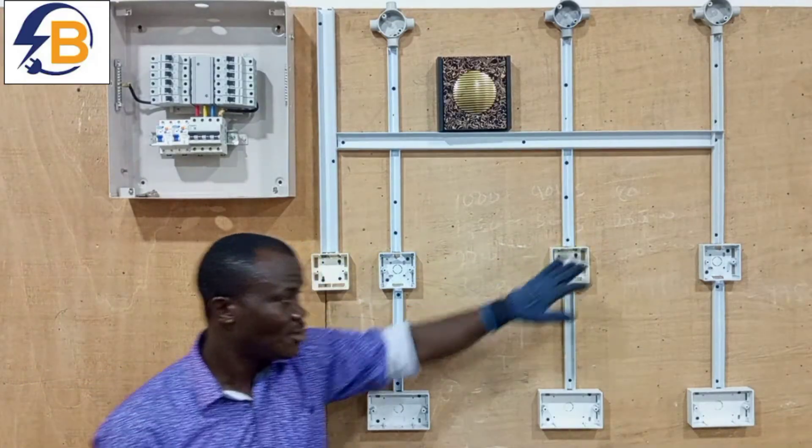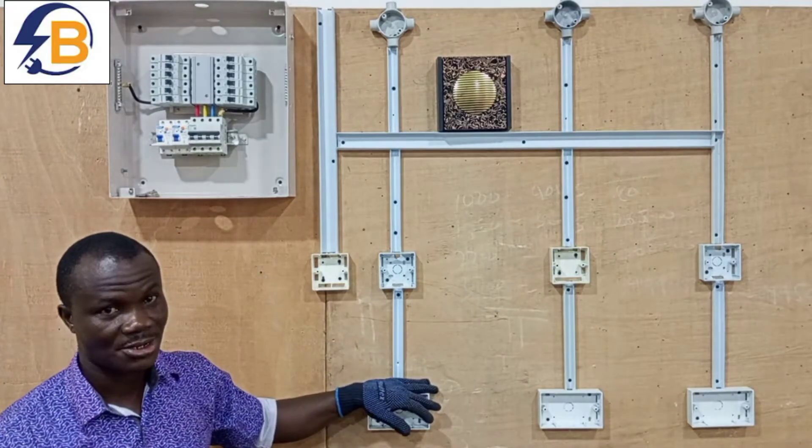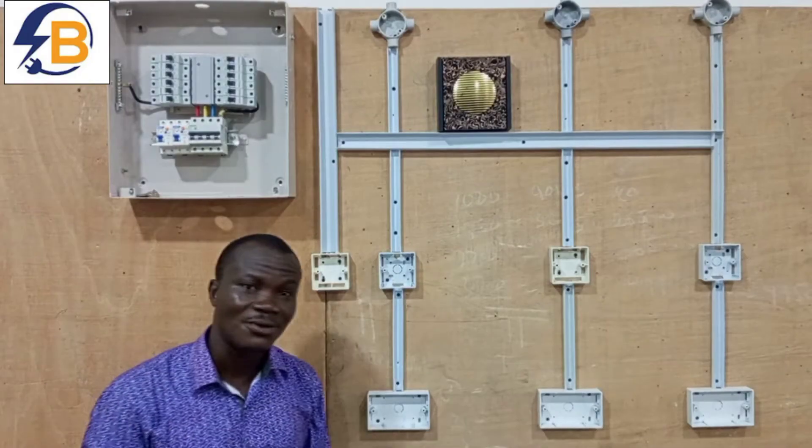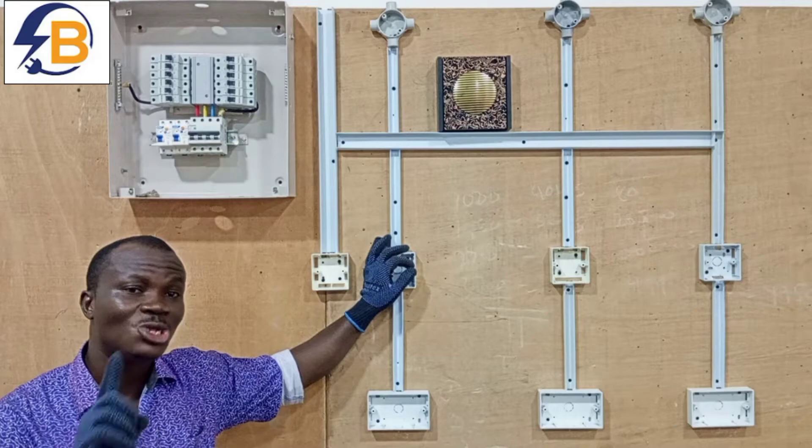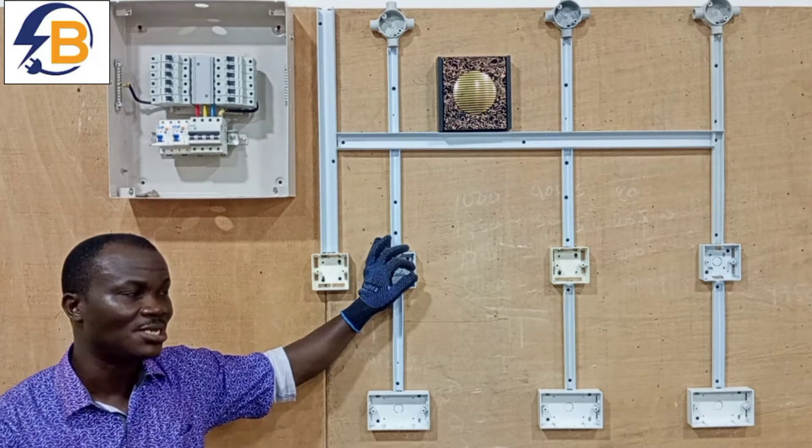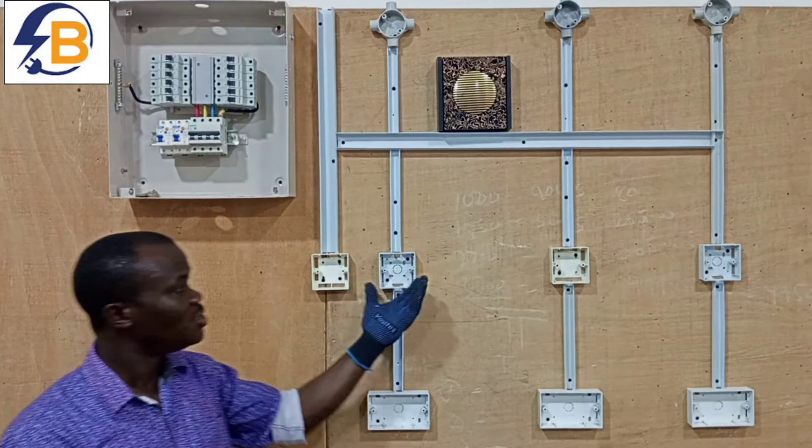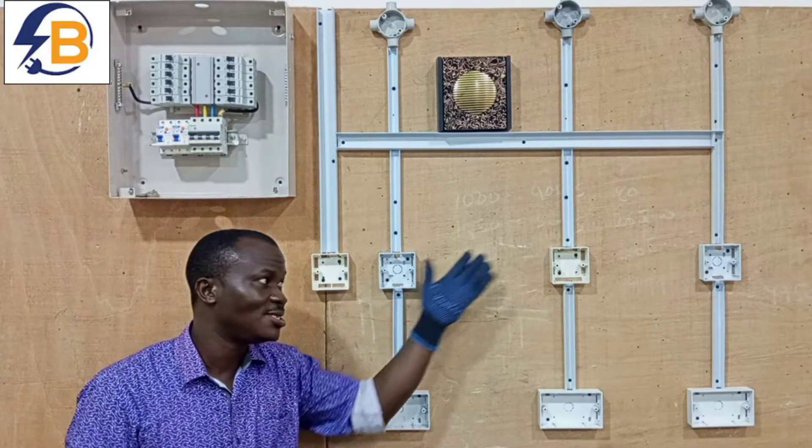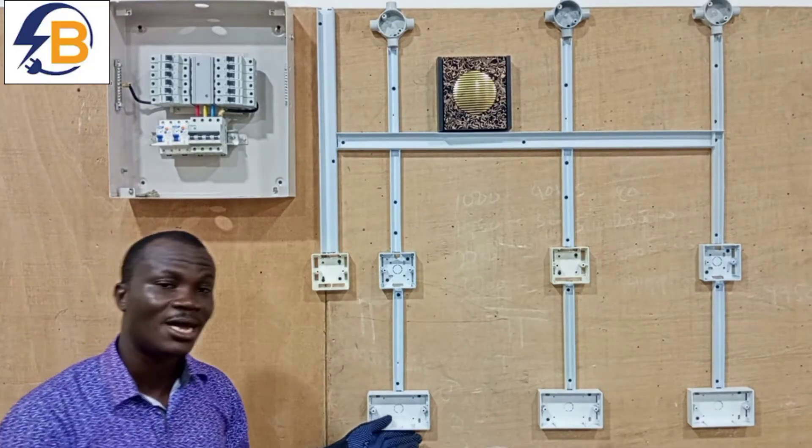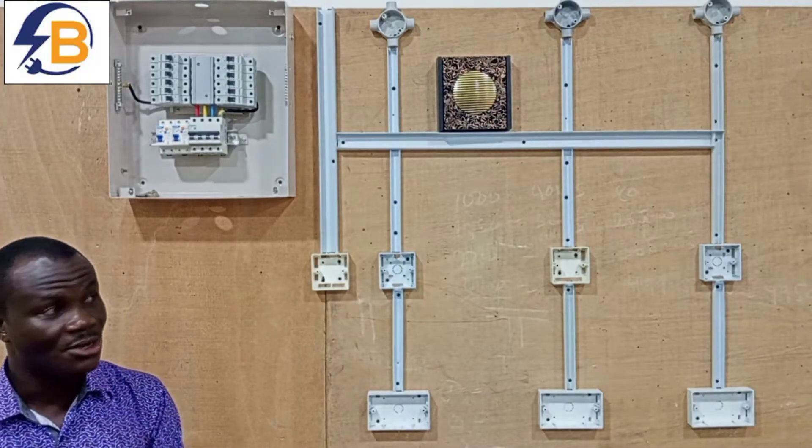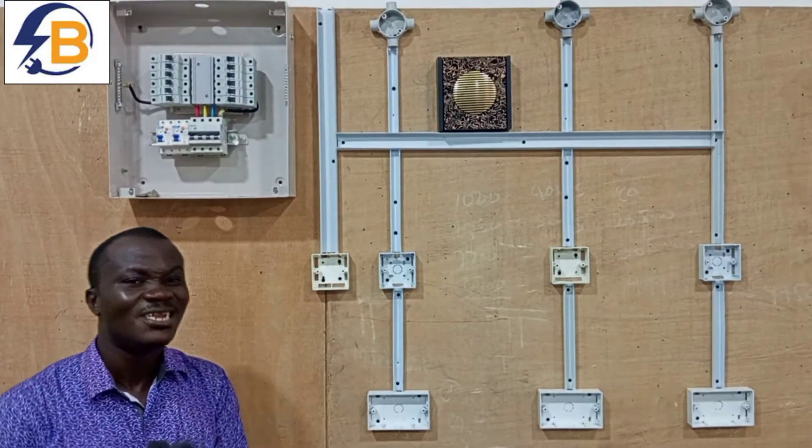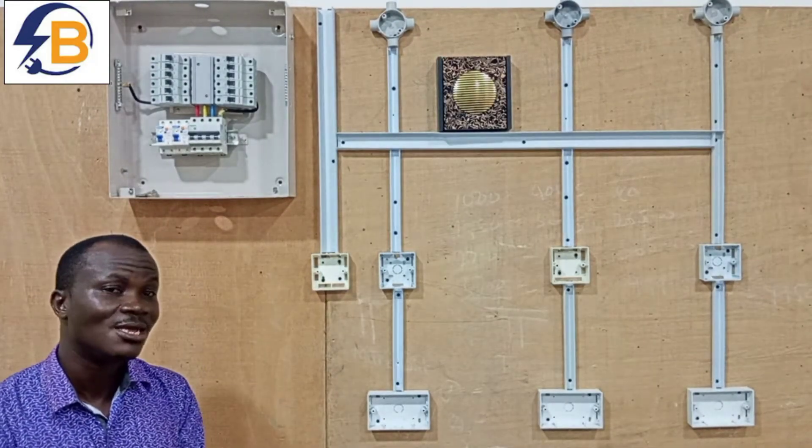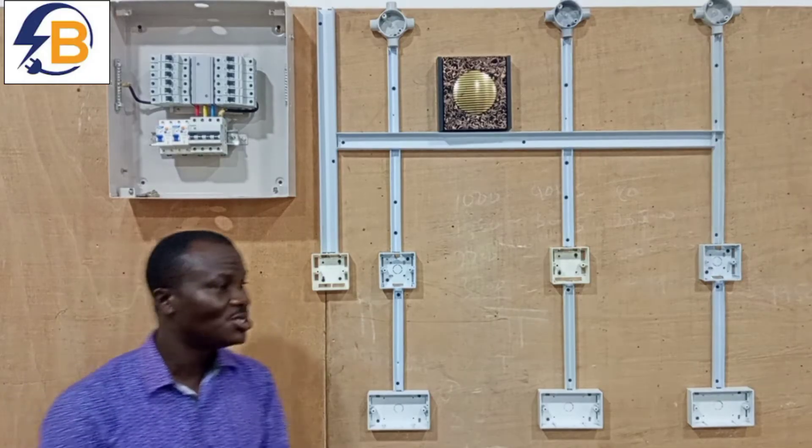We are going to separate the lighting circuit from the power circuit. For this particular wiring a minimum number of brackets we can use should be two brackets with different ratings, so that we can use a smaller rating for the lighting circuit and then we use the higher rating for the power circuit.